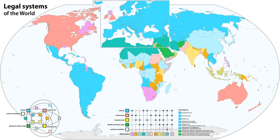While the concept of codification dates back to the Code of Hammurabi in Babylon ca. 1790 BC, civil law systems derive from the Roman Empire and, more particularly, the Corpus Juris Civilis issued by the Emperor Justinian ca. AD 529. This was an extensive reform of the law in the Byzantine Empire, bringing it together into codified documents. Civil law was also partly influenced by religious laws such as canon law and Islamic law.